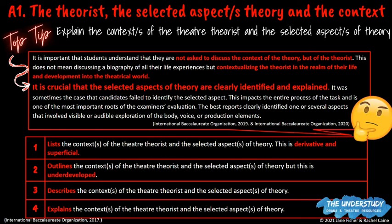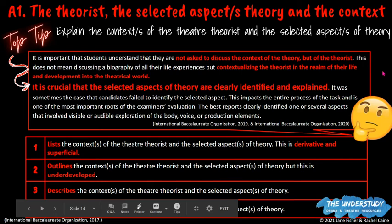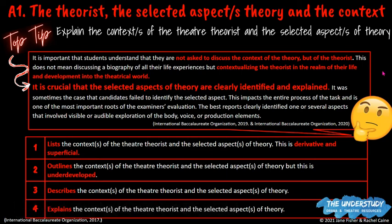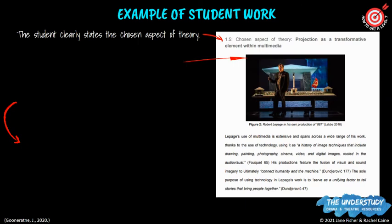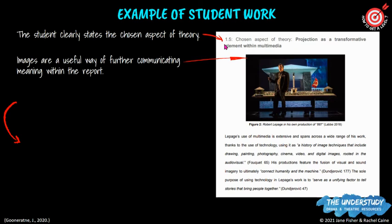The Criterion A descriptors use command terms from IB Theatre: lists, outlines, describes, and explains. Clearly stating the chosen aspect of your theory — the easiest way is to literally put it as a heading in your Part A. For example, one student used 'projection as a transformative element within multimedia' for Lepage. Images are also a really useful way of further communicating meaning within the report, and you should label and reference them with a caption accordingly.